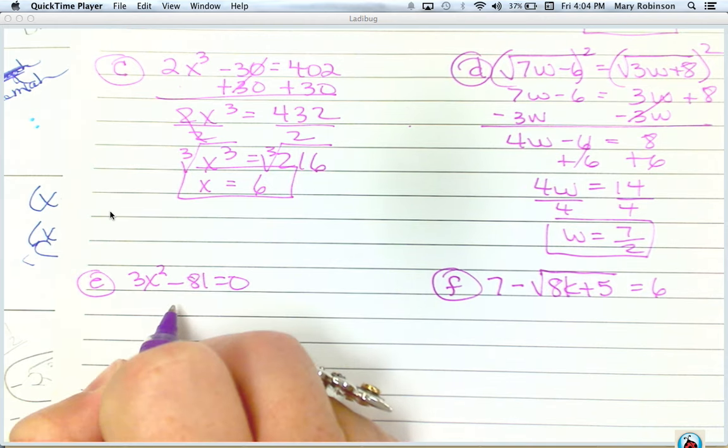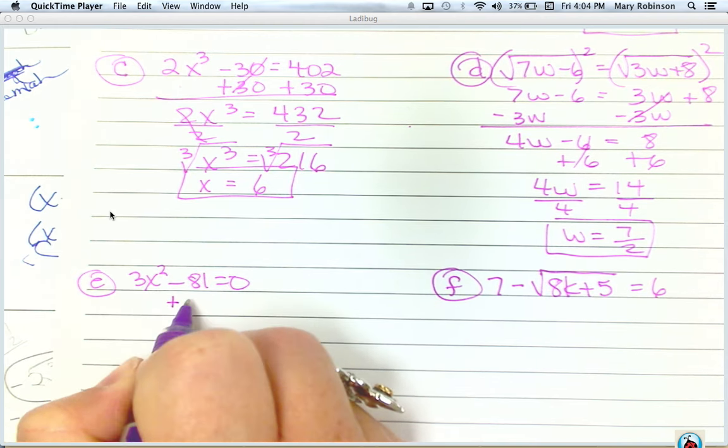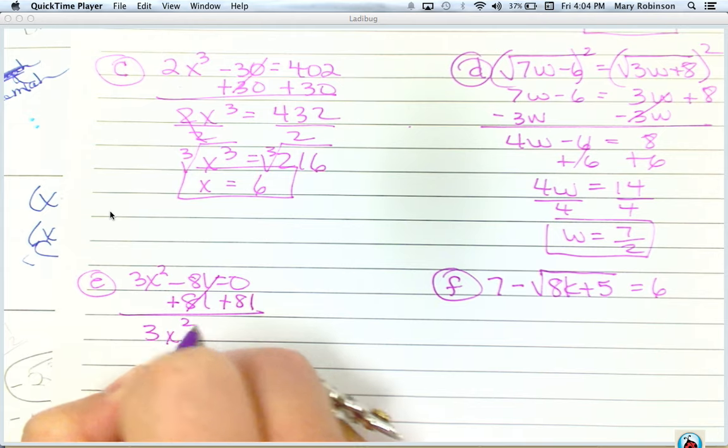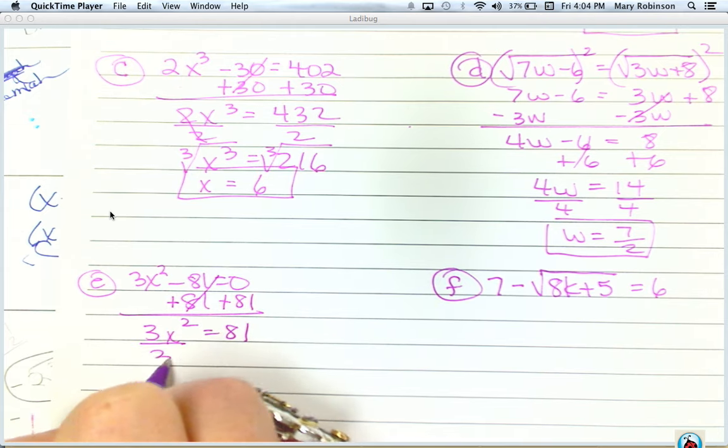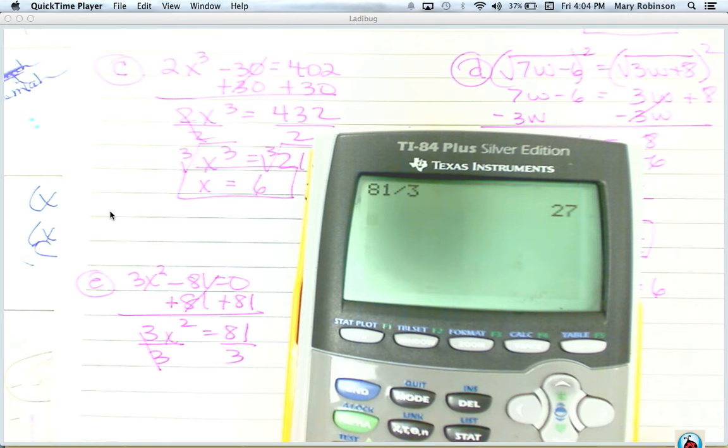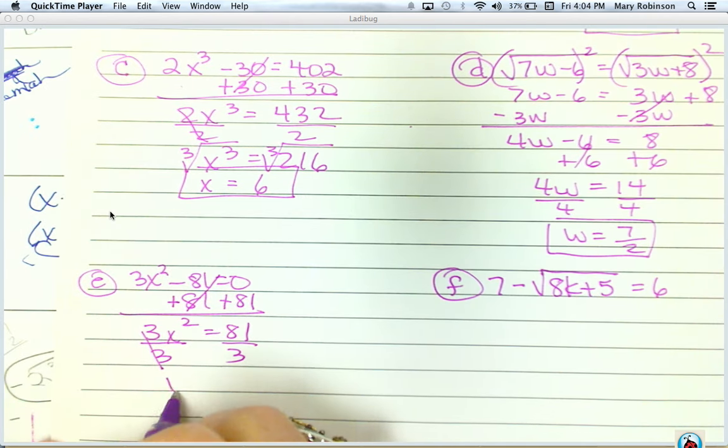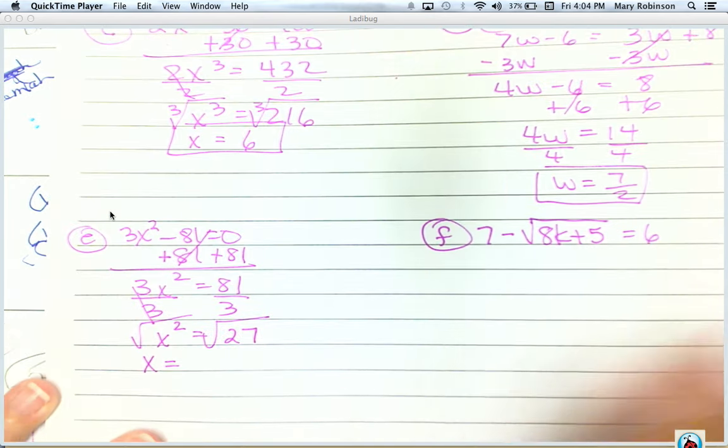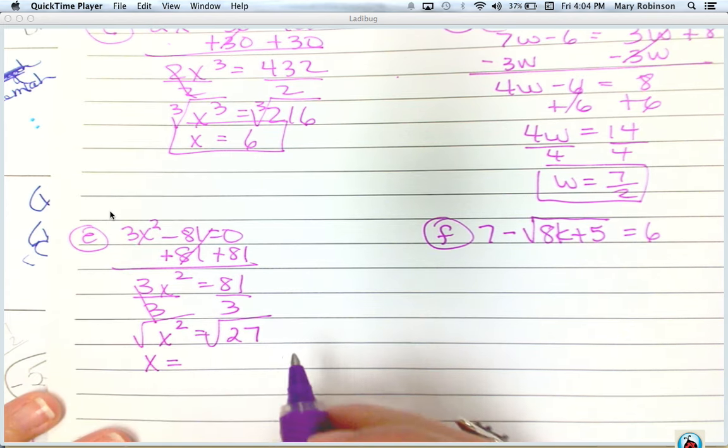On E, we're solving 3x squared minus 81. We isolate your x squared term. Divide both sides by 3. And we get 27. Then we take the square root of both sides. Now remember, we don't know if this x squared has a positive or negative value, but when we square it, we do get 27.